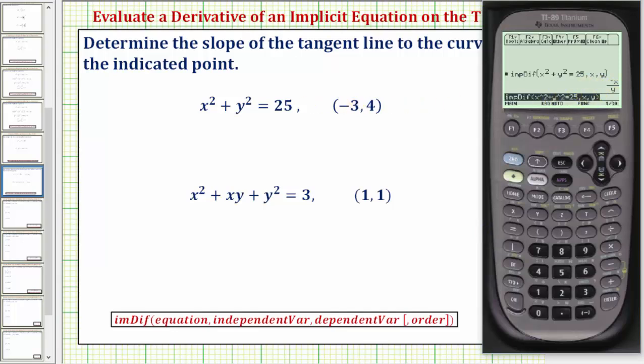But we can also evaluate the derivative at this point by going back to the previous entry. So we'll press the right arrow and then we'll press this vertical bar and enter x equals negative three and y equals four. So x equals negative three. Now we'll go to the catalog for and. So catalog, press down once for the and, press enter. Now we enter y equals four and enter.